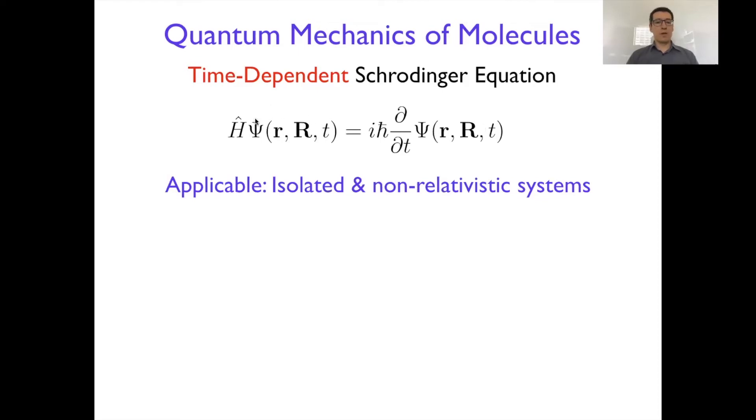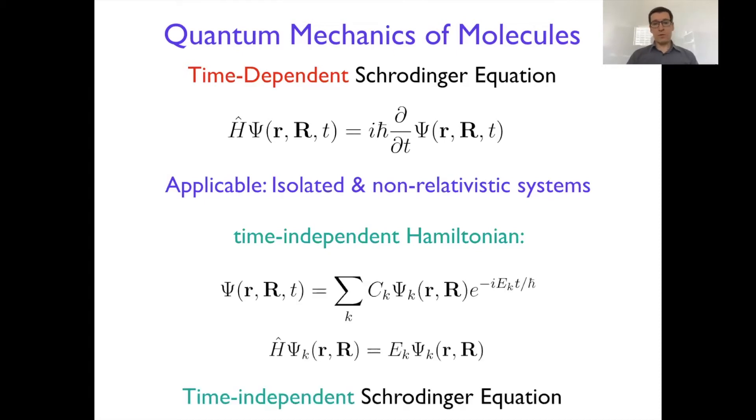We have a time-independent part which the Hamiltonian usually is, and time-dependent part, and the wave function contains both coordinates which are time-independent and time-coordinate. Mostly molecules, unless you consider them in strong electromagnetic fields which are changing with time, molecules in vacuum have the Hamiltonians which are time-independent.